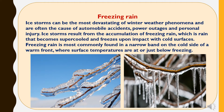Freezing rain: Ice storms can be the most devastating of winter weather phenomena, often causing automobile accidents, power outages, and personal injury. Ice storms result from the accumulation of freezing rain, which is rain that becomes supercooled and freezes upon impact with cold surfaces. Freezing rain is most commonly found in a narrow band on the cold side of a warm front, where surface temperatures are at or just below freezing.